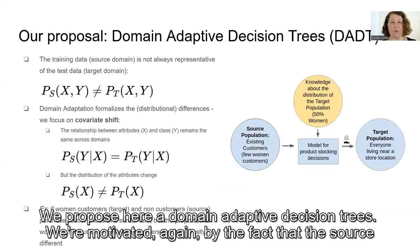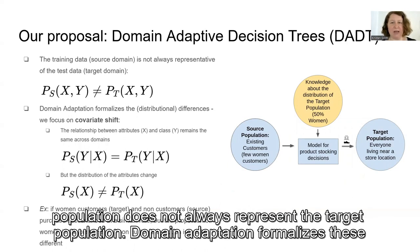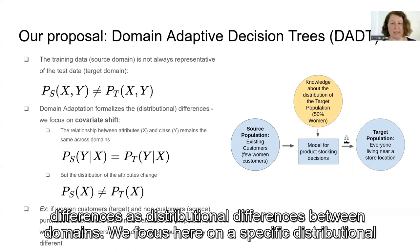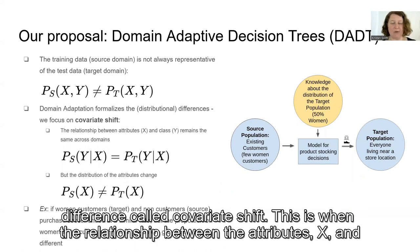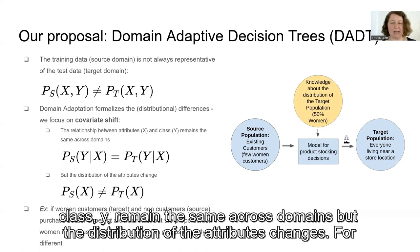We propose here domain adaptive decision trees. We're motivated by the fact that the source population does not always represent the target population. Domain adaptation formalizes these differences as distributional differences between domains. We focus here on a specific distributional difference called covariate shift. This is when the relationship between the attributes X and class Y remain the same across domains, but the distribution of the attributes changes.